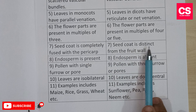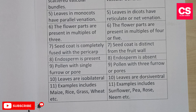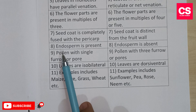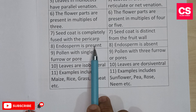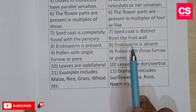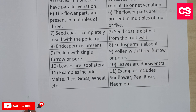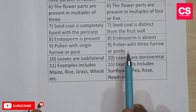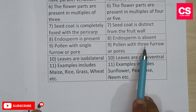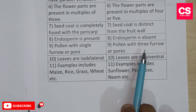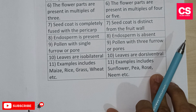In dicot plants the seed coat is distinct from the fruit wall. The eighth difference: endosperm is present in monocot plants but absent in dicot plants. The ninth difference: monocot pollen has a single furrow and pore, while dicot pollen has three furrows and pores.